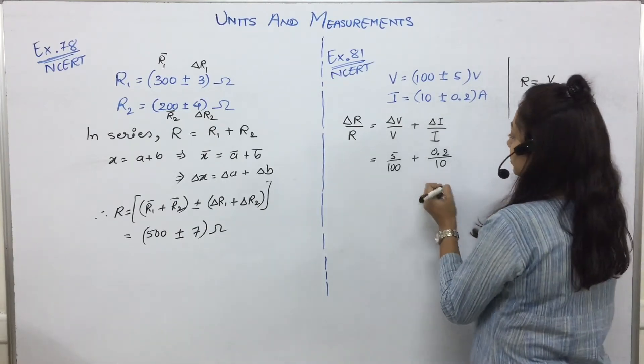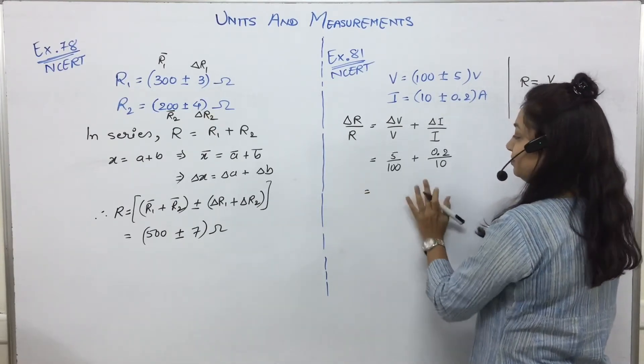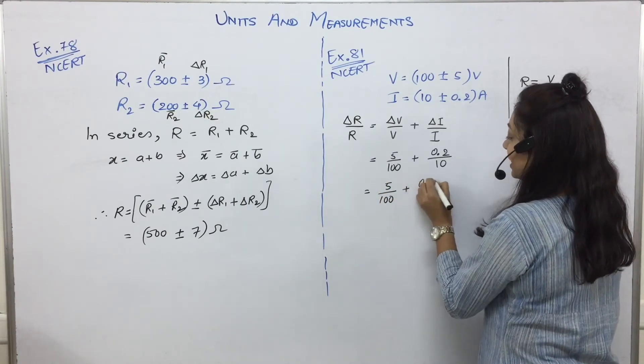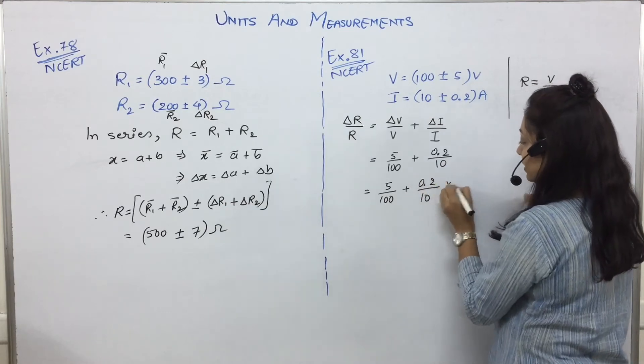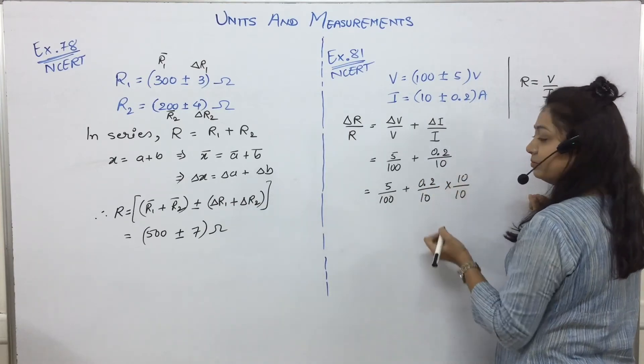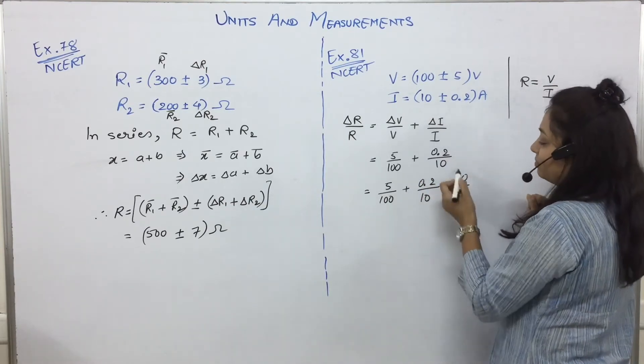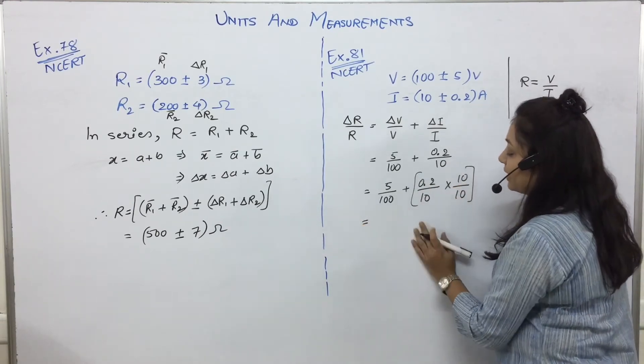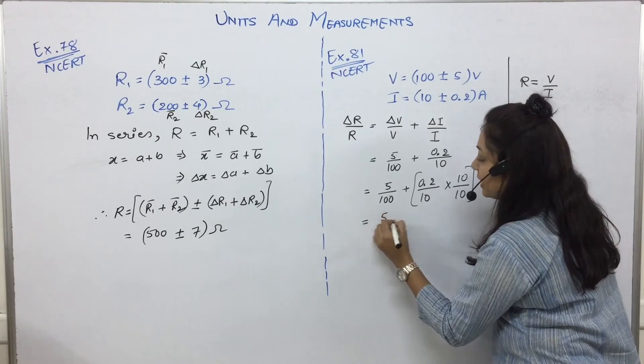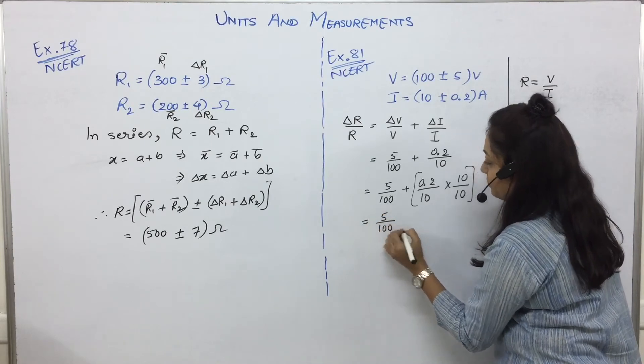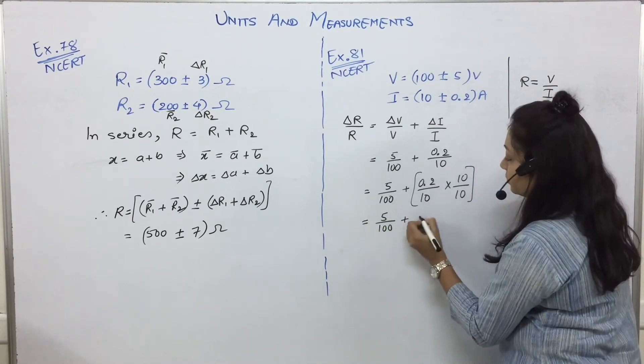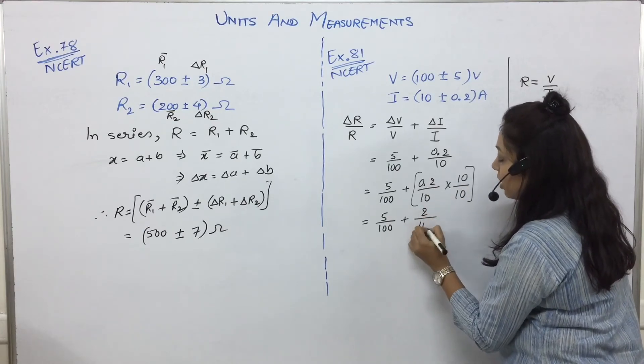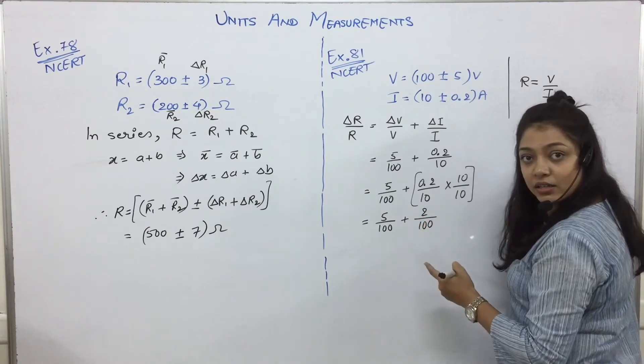Okay, so, those who are not very comfortable with maths can do this. Into 10, into 10. I'm just multiplying and dividing by 10. So this will end as 5 by 100 plus 0.2 into 10, 2 by 10 into 10, 100. Right?